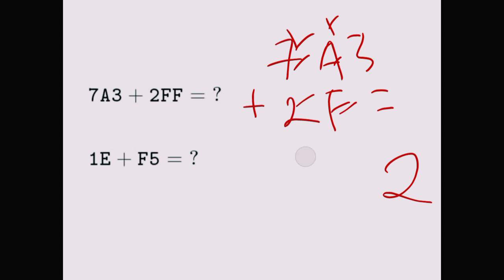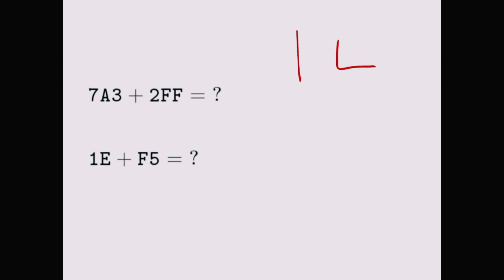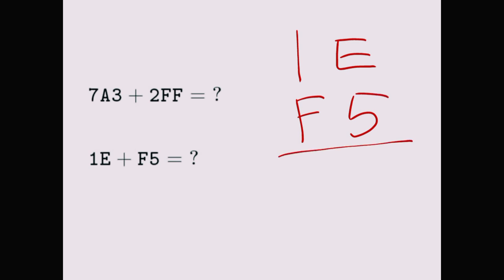The fourth example: we have 1E plus F5. E is 14 in base 16. So 14 plus 5 is 19 — we can't write 19. 19 divided by 16 is one remainder three, so we write three and carry the one. Then one plus one is two, plus F which is 15: two plus 15 is 17. 17 divided by 16 is one remainder one, so we write one and carry the one.